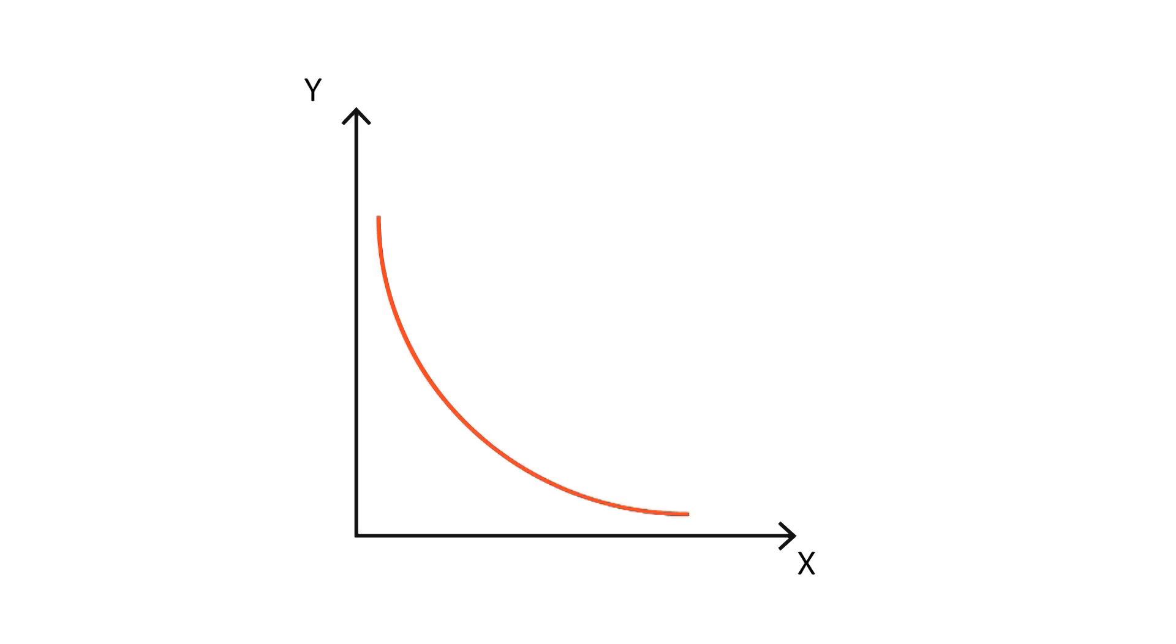This indifference curve will therefore join all the different bundles of these goods that will report the same utility. This way, the consumer will be indifferent between choosing bundle A or bundle B.